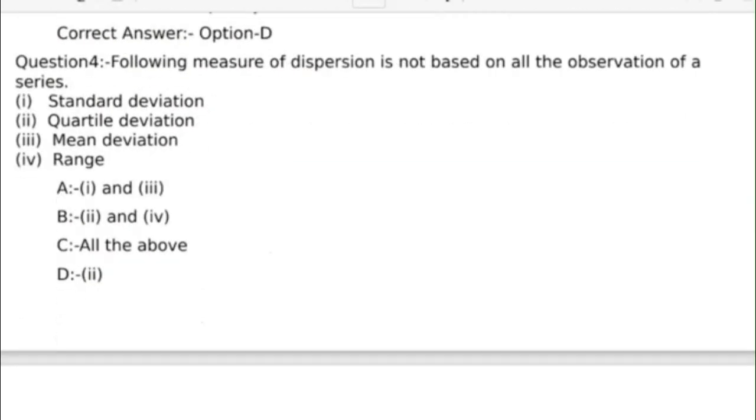Fourth question: Following measure of dispersion is not based on all the observation of a series. Correct answer: Option B, two and four.